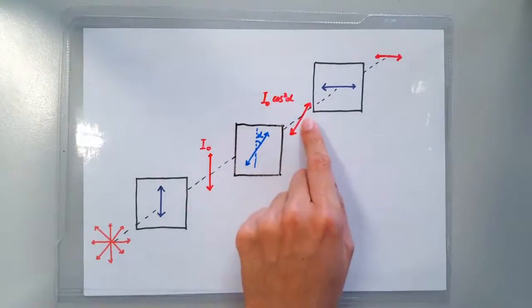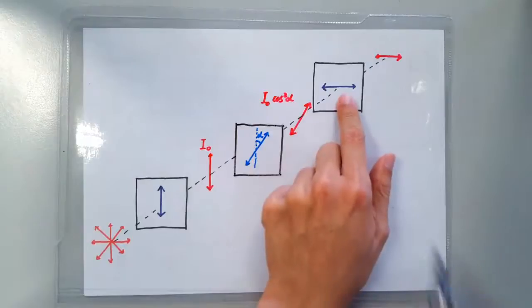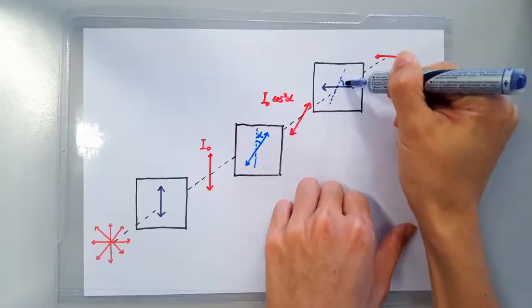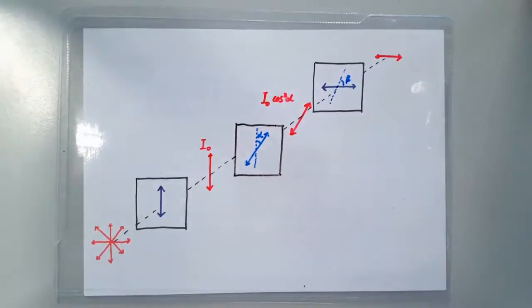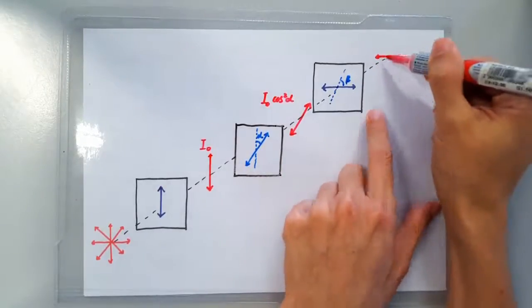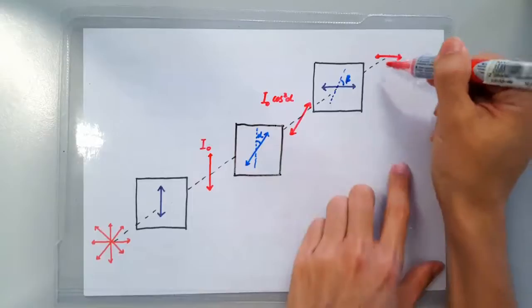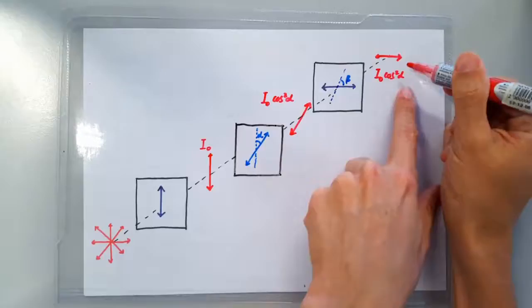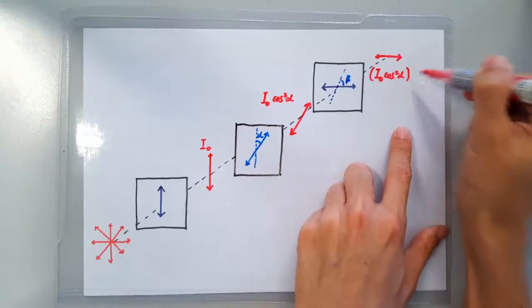Now this polarized light is misaligned with this polarizer by an angle, let's call it beta. So again, according to Malus's law, the intensity of the light after passing through this polarizer is going to be the original intensity I₀ cos² alpha multiplied by cos² beta.